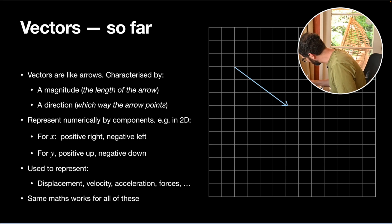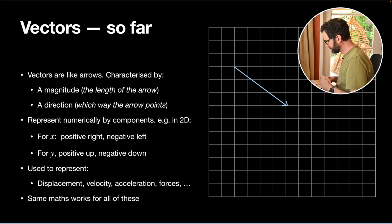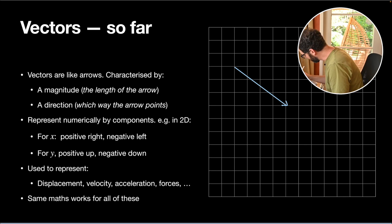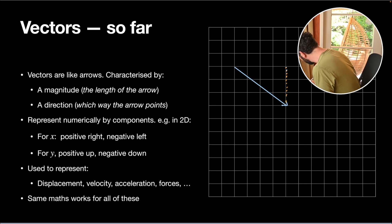We can quantify that direction with some kind of angle, but we'll cover that off a bit later on. Numerically, it's useful to put some numbers to this, so what we often do — for example in two dimensions — is look at a vertical and a horizontal component.